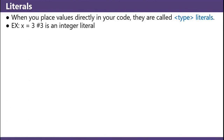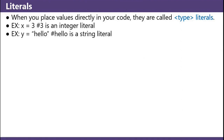Example: x equals 3. Three is an integer literal. And that hashtag on that line — that's how you make a comment in Python. Another example: y equals 'hello'. Hello is a string literal. Char z equals 'a'. A is a character literal.